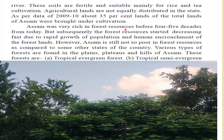Assam was very rich in forest resources before 4-5 decades from today, but subsequently the forest resources started decreasing. Still, Assam has green forest cover, especially in areas outside major cities like Guwahati. Various types of forests are found in the plains, plateaus, and hills of Assam — these include tropical evergreen forests, tropical semi-evergreen forests, riverine forests, tropical moist deciduous forests, and tropical dry deciduous forests.